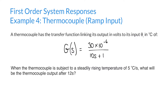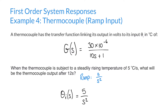This example is very similar to the previous one involving the same thermocouple, but whereas the previous example involved a step input, what we have here is a ramp input because the input is steadily increasing by 5 degrees Celsius every second. A ramp input takes the form of a over s squared in the s-domain, where a is the gradient or rate of increase — in our case 5. So our input temperature theta_i in the s-domain is equal to 5 over s squared.